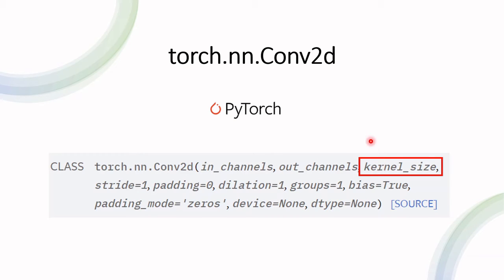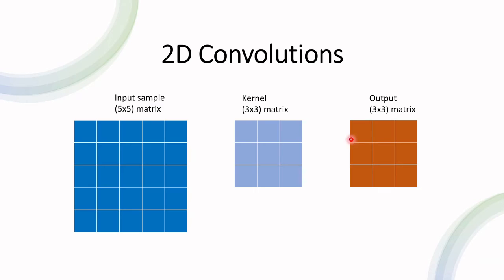The next parameter is the kernel size, which we've already seen. We decided the kernel is three by three, but the dimensions don't have to be equal — it could be two by one, five by eight, or whatever you want, as long as it's smaller than the input sample. It's also important to understand that the larger the kernel is, the smaller the output matrix, because there are fewer shifts the kernel can make.